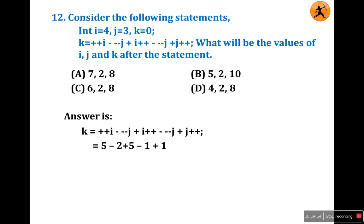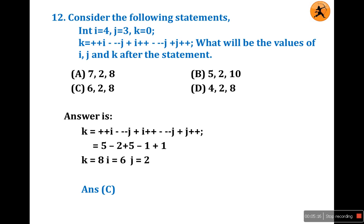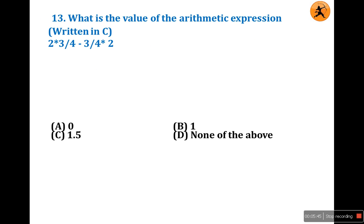We can calculate values directly by counting. i is incremented two times, so i = 4 + 2 = 6. j is decremented two times and incremented once, so it is decremented net once: j = 3 - 1 = 2. So i = 6, j = 2. Solving the full expression gives k = 0. Answer is C.